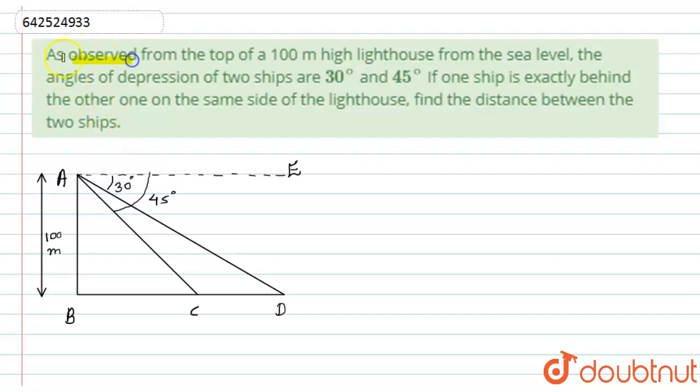Here we have given: as observed from the top of a 100 meter high lighthouse from the sea level, the angles of depression of two ships are 30 degrees and 45 degrees. If one ship is exactly behind the other one on the same side of the lighthouse, find the distance between the two ships.